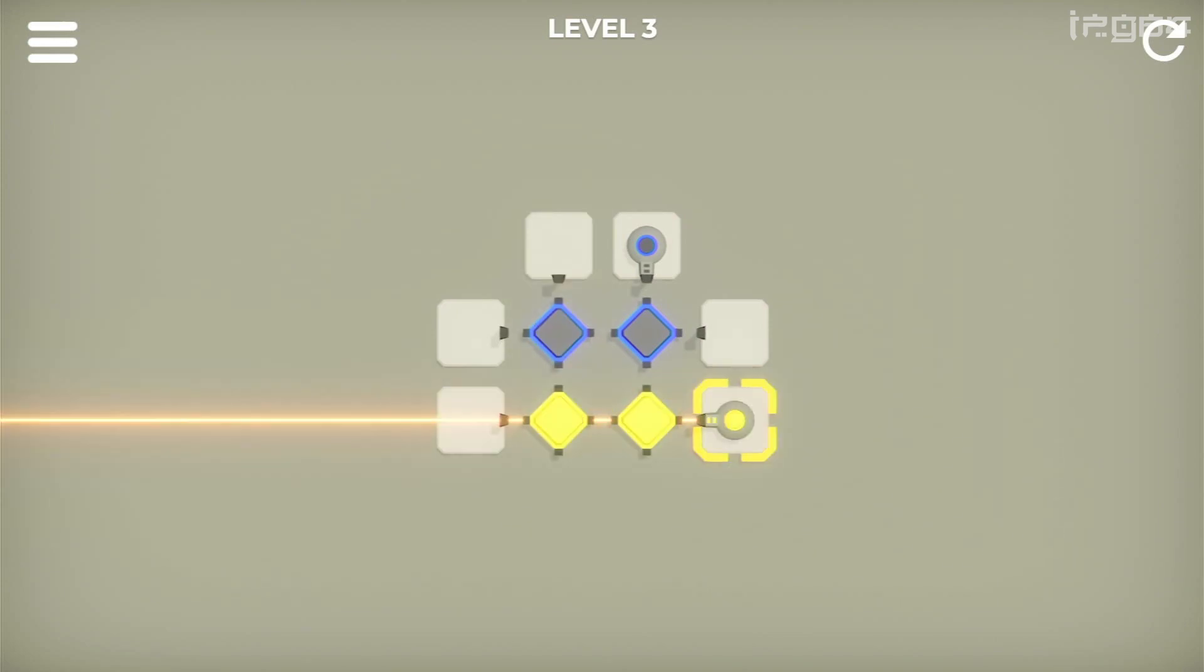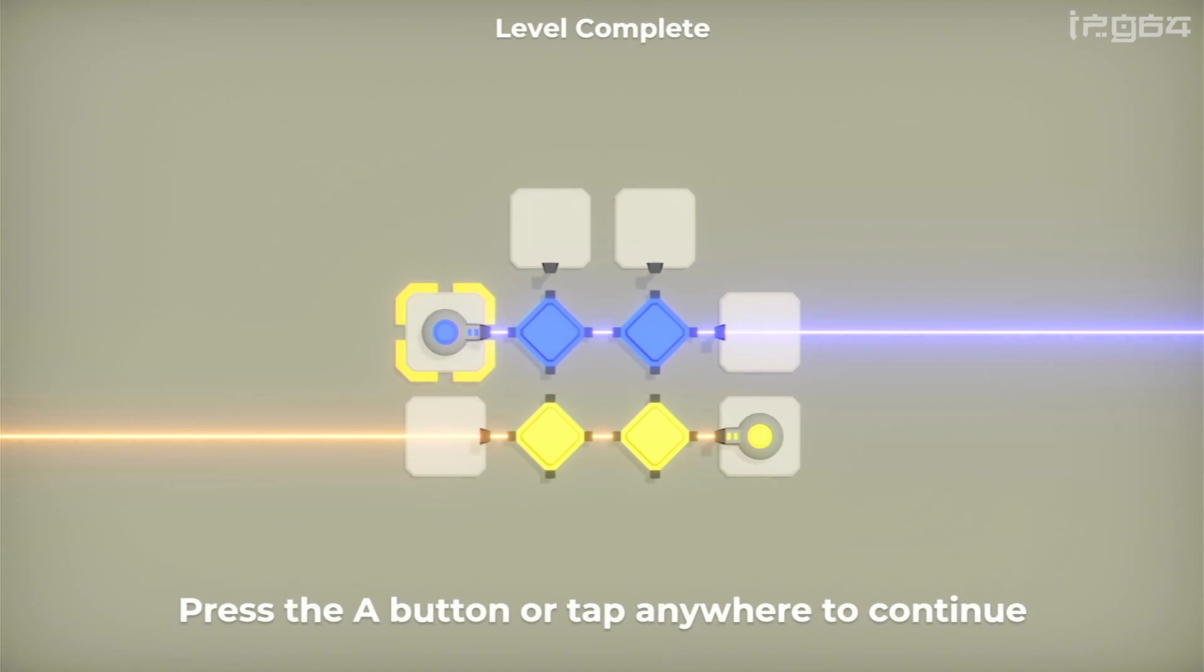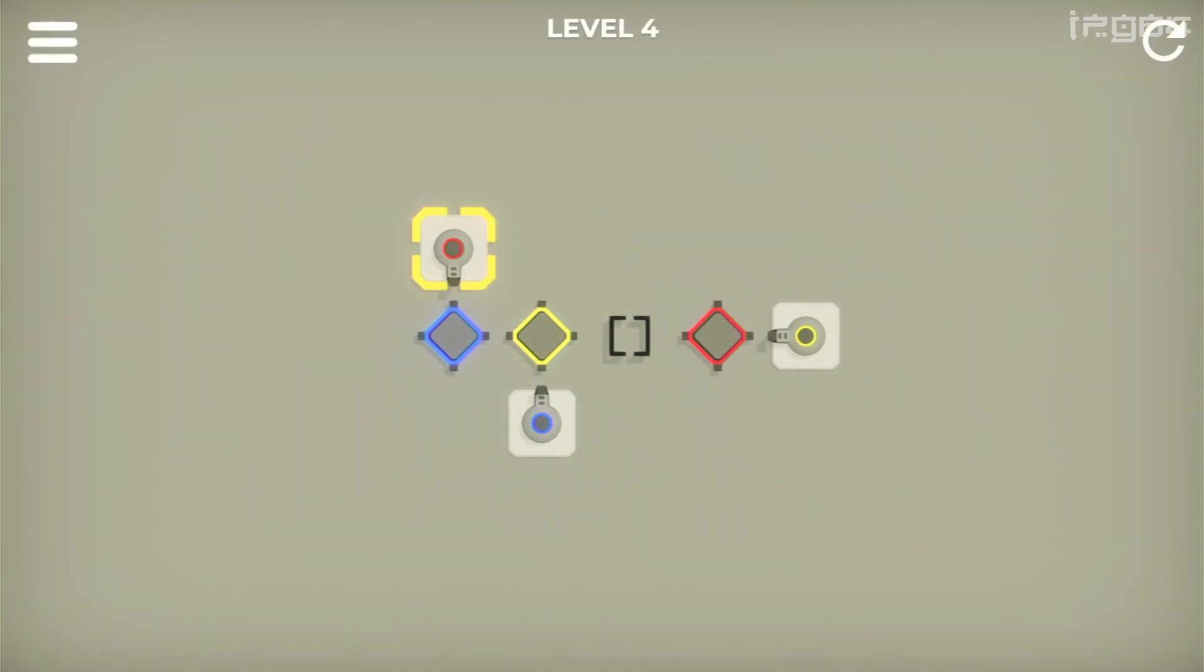Now, it does get harder. Like I said, I think I got to about level 50 something. And basically, you're either turning them on or blending colors together to make the others.